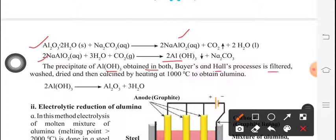The equation for the Hall process is: Al2O3·2H2O + Na2CO3 → 2NaAlO2 + CO2 + 2H2O. Then 2NaAlO2 + 3H2O + CO2 → 2Al(OH)3 + Na2CO3. The precipitate of Al(OH)3 obtained in both Bayer's and Hall's process is filtered, washed, dried, then calcined by heating at 1000 degrees Celsius to obtain alumina. That means 2Al(OH)3 → Al2O3 + 3H2O.